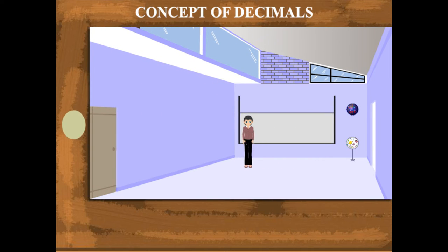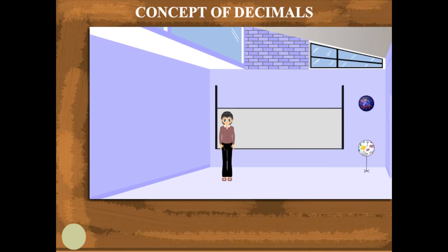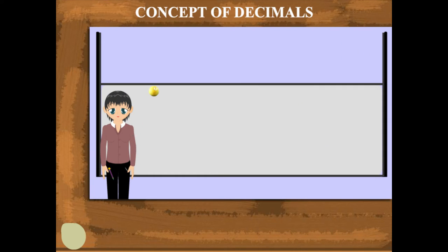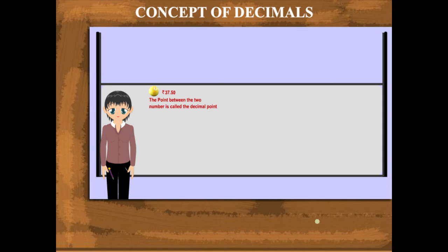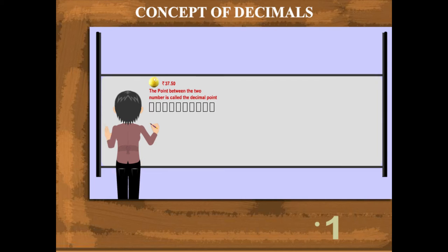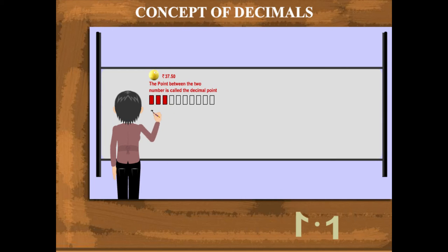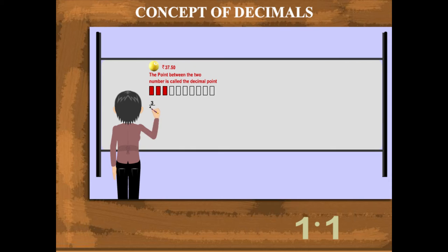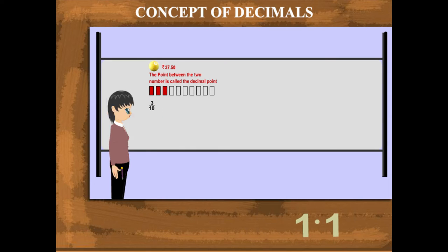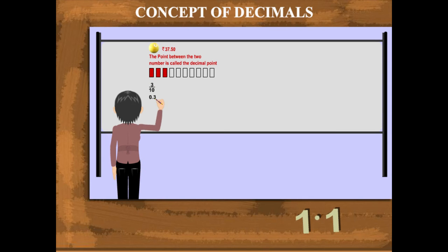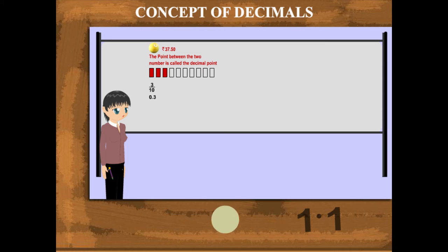Concept of Decimals. Teacher Nancy explains that the point between two numbers is called the decimal point. In a group of 10 bars, if you select 3, the fraction becomes 3 upon 10, and the decimal is written as 0.3.